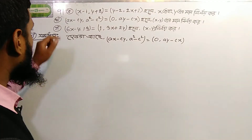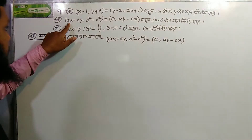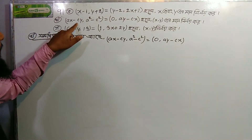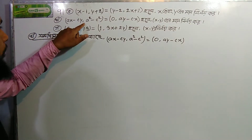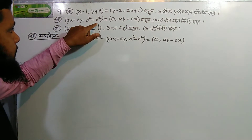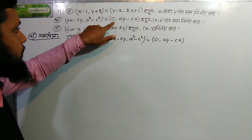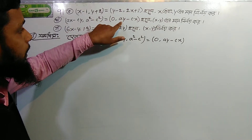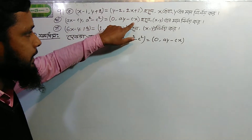We have a number of x minus c·y, a square minus c square from 0, and a·y minus c·x.